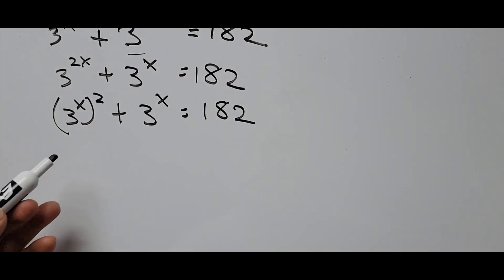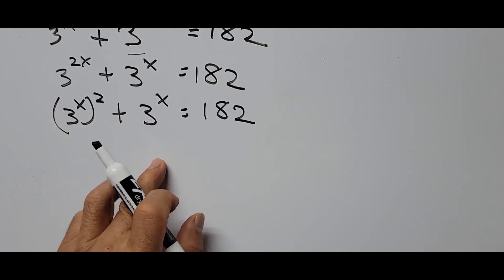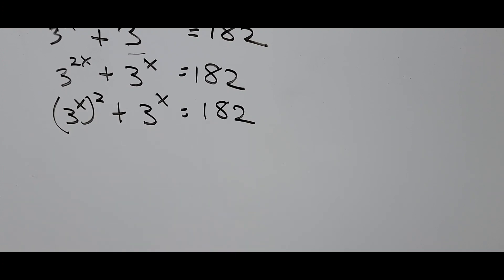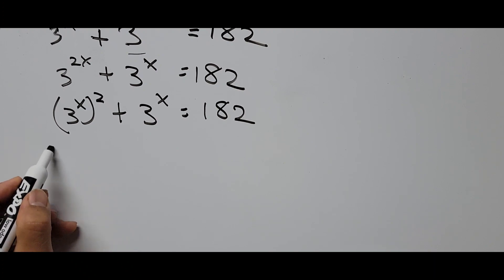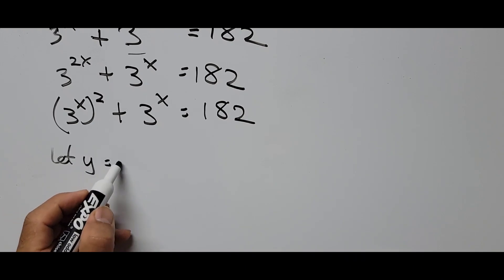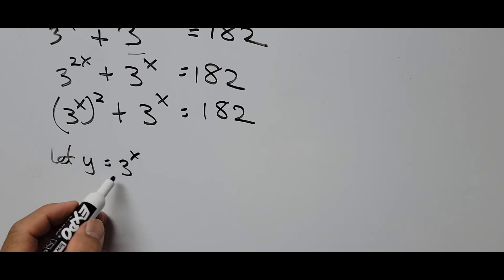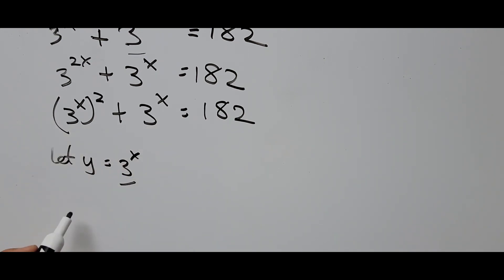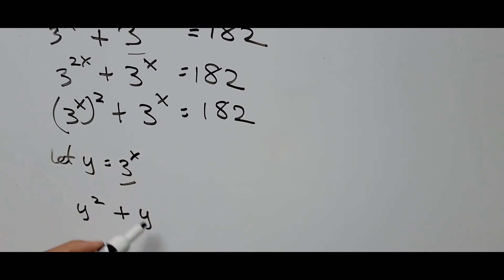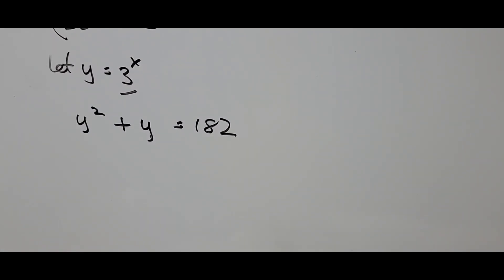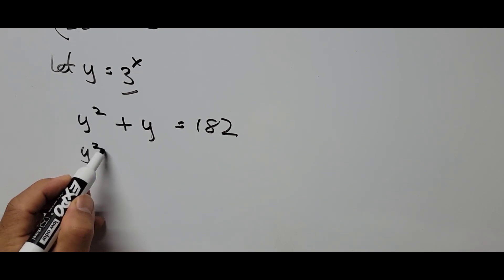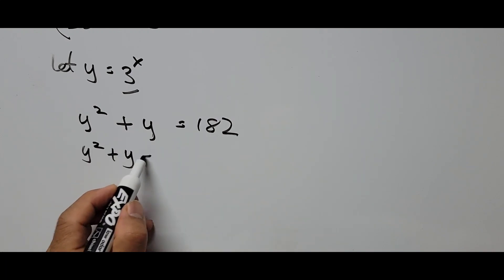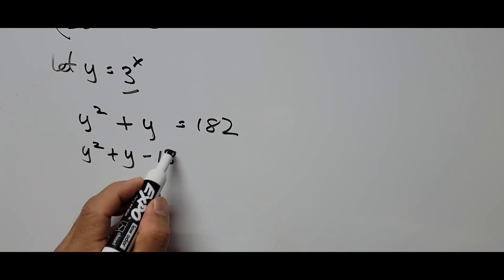If you notice, there's a pattern here: we have an exponent of 2 and an exponent of 1. We can introduce a substitution variable. Let y equal 3 raised to the x. Substituting, we get y squared plus y equals 182. Rearranging, we transpose 182 to get y squared plus y minus 182 equals 0.